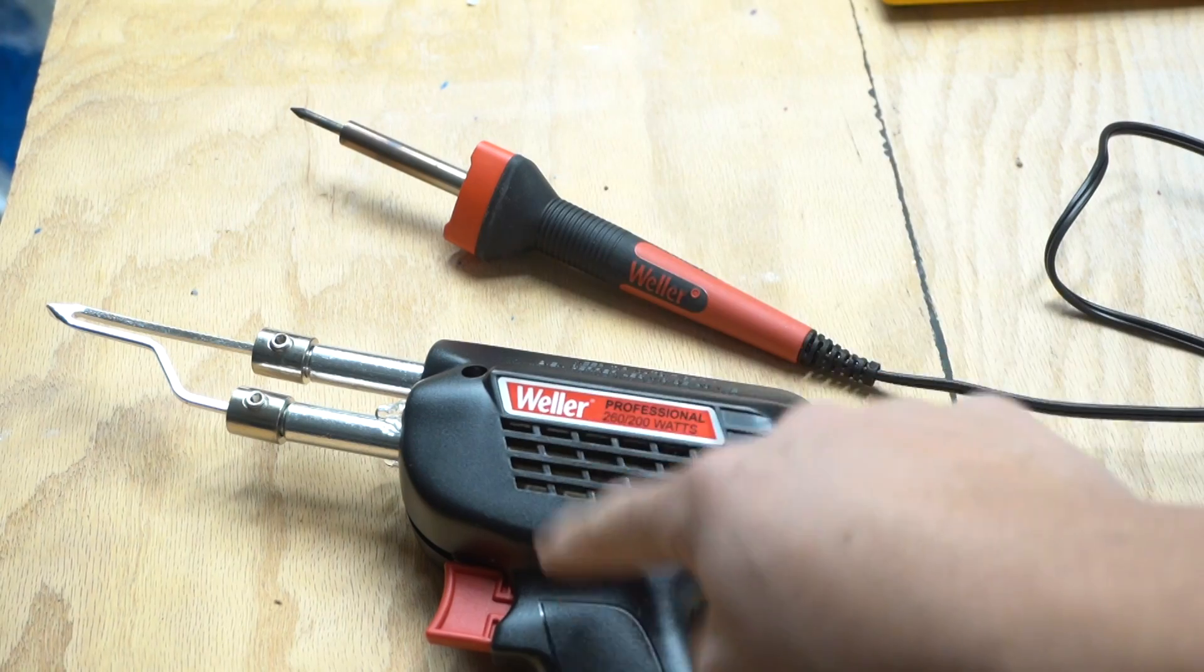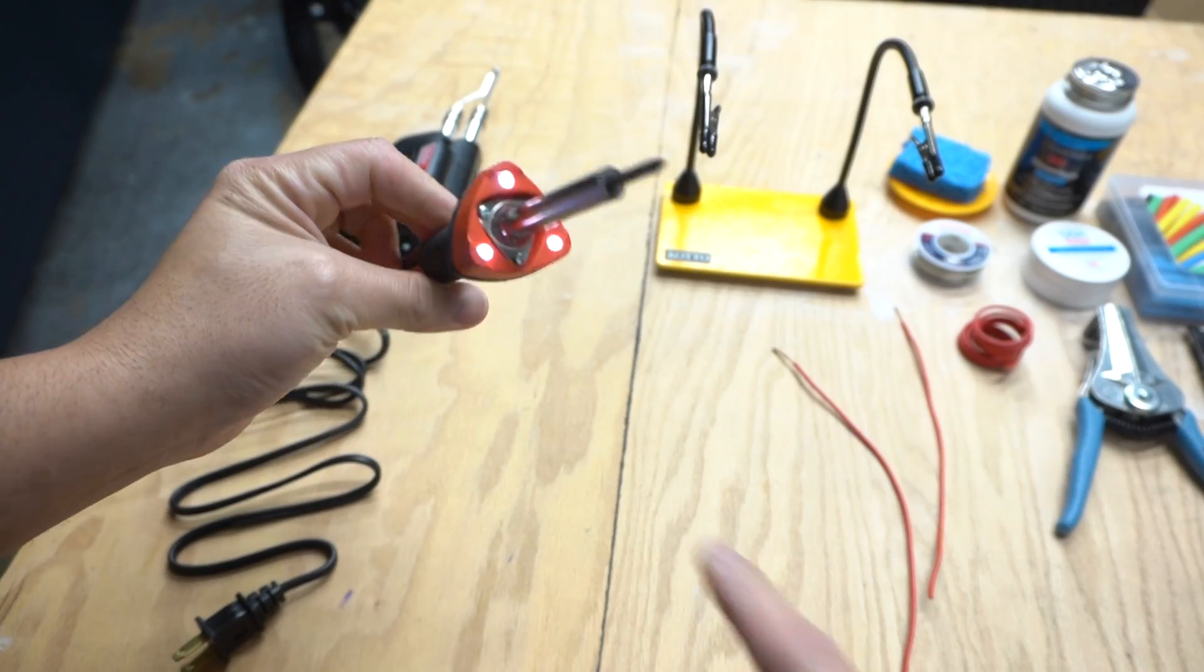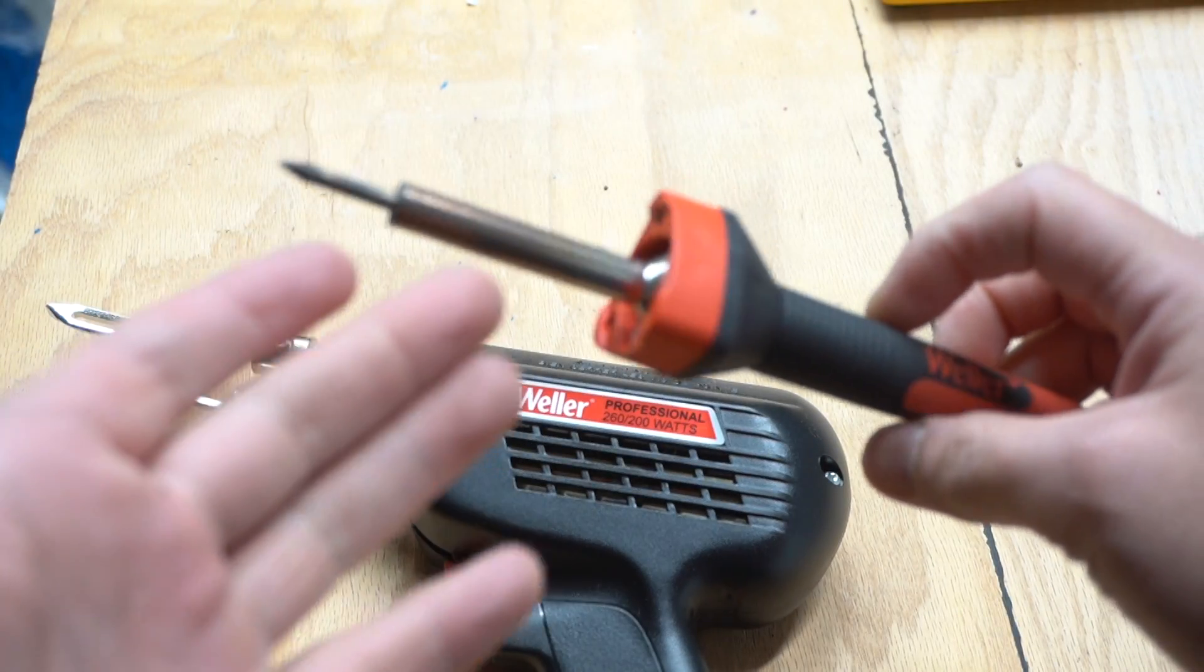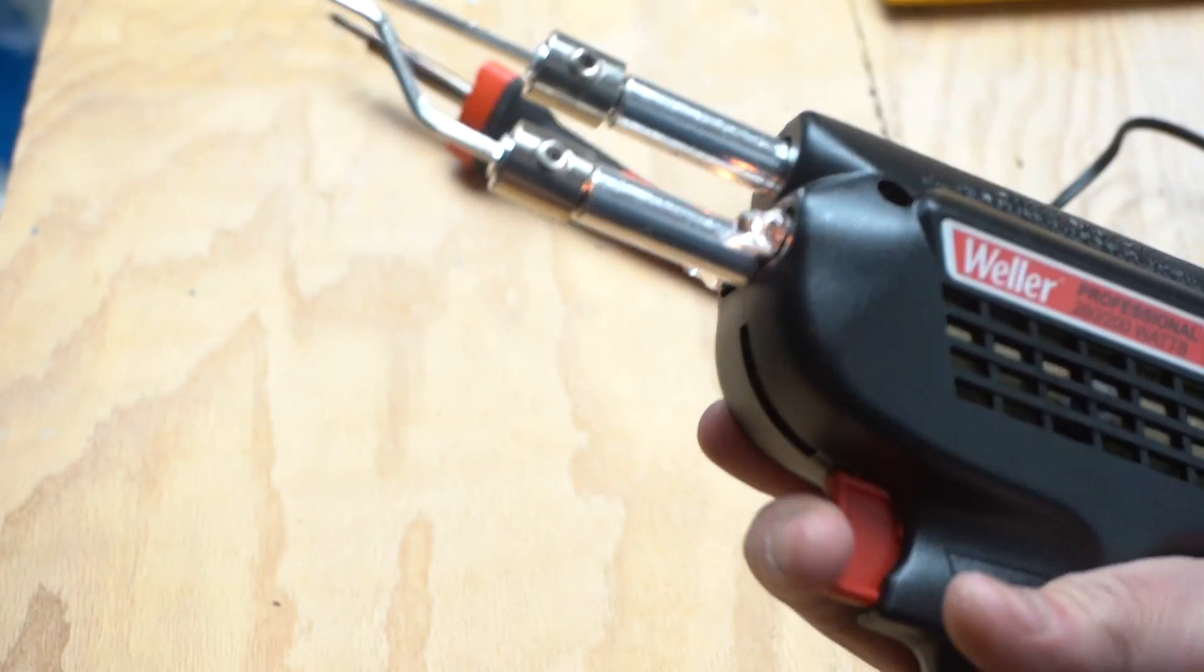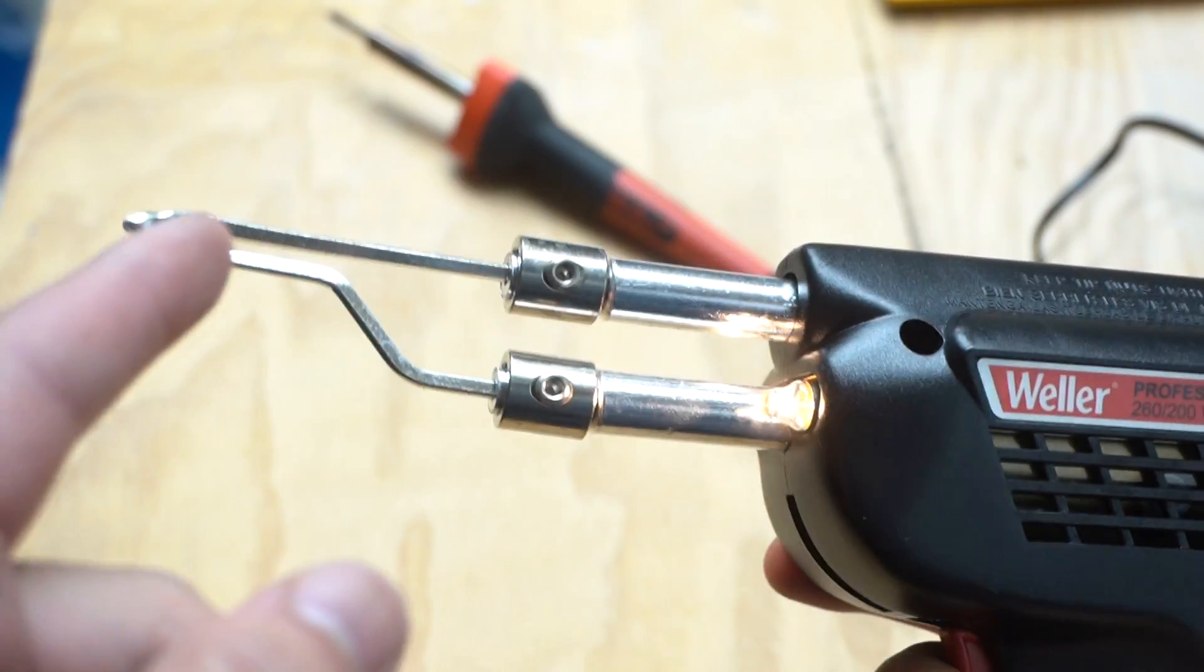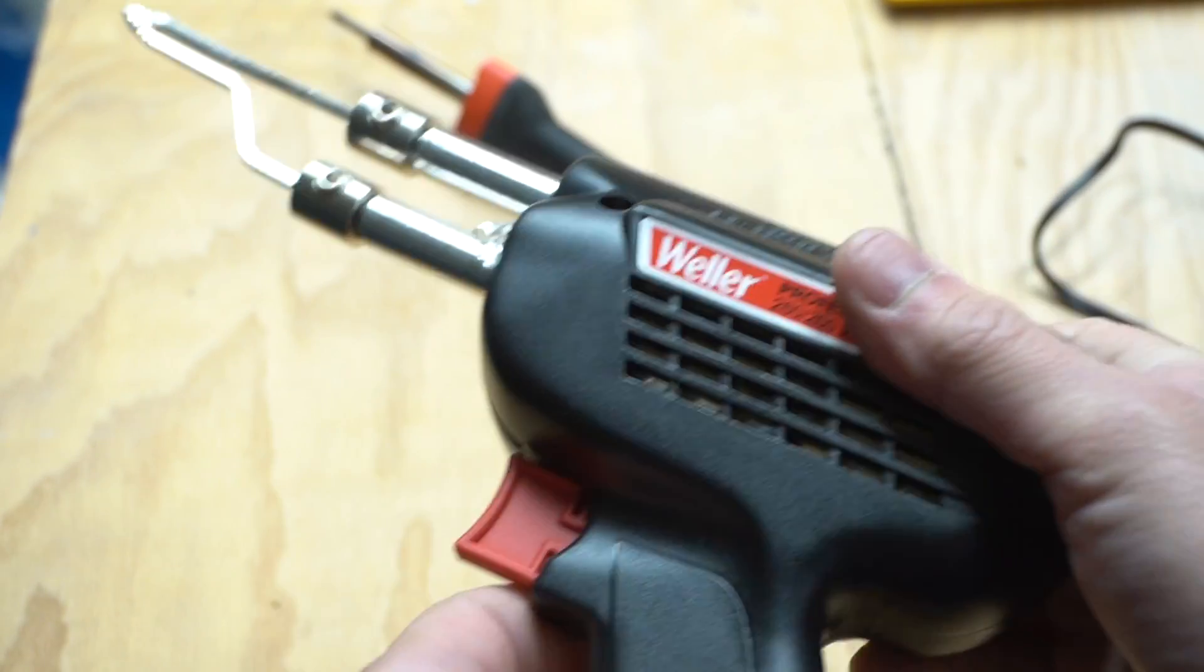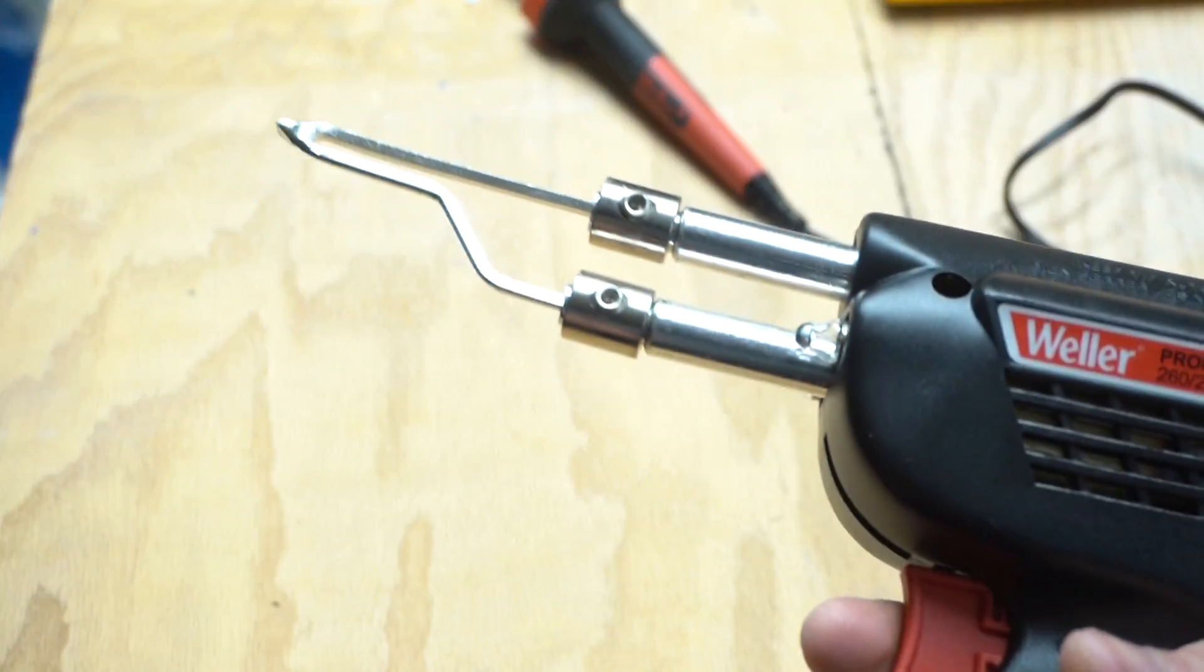Let me show you the difference between the soldering gun and the soldering iron. The soldering iron, once you plug it in, it will start to heat up right away. There's no control on whether to turn it on or off. The advantage of the soldering gun is that it only turns on when you pull the trigger, and the light will turn on, indicating that this is getting hotter at the tip. So I'm going to be using this one in today's demonstration, other than the soldering iron, just because it's more powerful and we can control it a lot better.